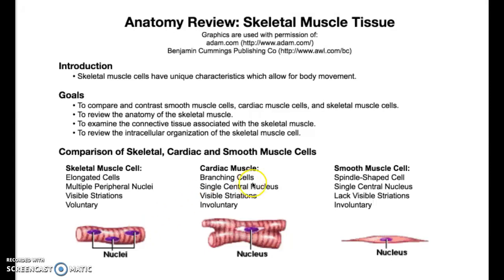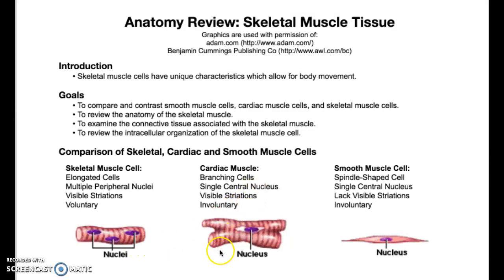We also have cardiac muscle. Cardiac muscle and skeletal muscle look similar, but there are a few differences. Instead of having multiple nuclei, cardiac muscle just has one, and cardiac muscle branches in a way that's very different than skeletal muscle. The last difference is that cardiac muscle is involuntary — fortunately, we do not have to remember to keep our heart beating throughout the day.